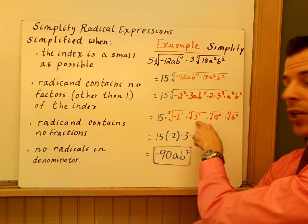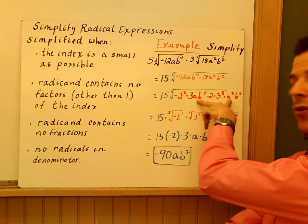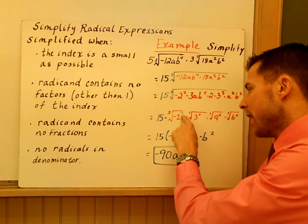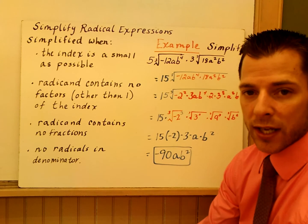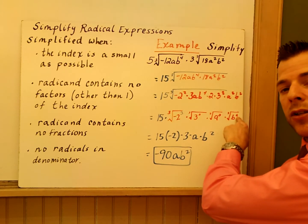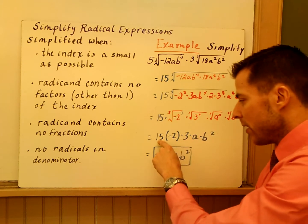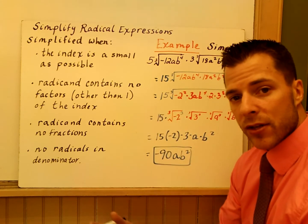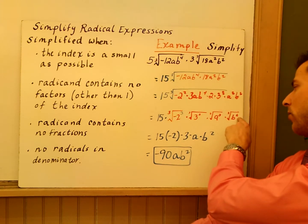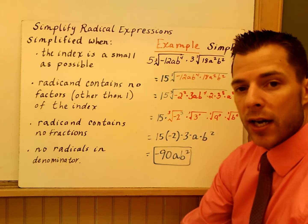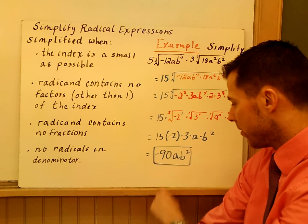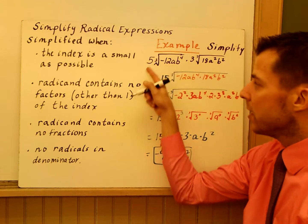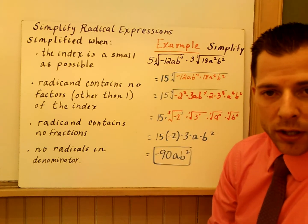Three times three squared gives three cubed. a times a squared is a cubed. b to the fourth times b squared is b to the sixth. Notice all those powers under the radicand match the index of three. Six can be written as b squared to the third power, so everything comes out. You get 15 times negative 2 times 3 times a times b squared, and the final answer is negative 90ab squared. The question may be: you have a negative under the index — but it's a cube root, so having a negative under an odd index is okay.